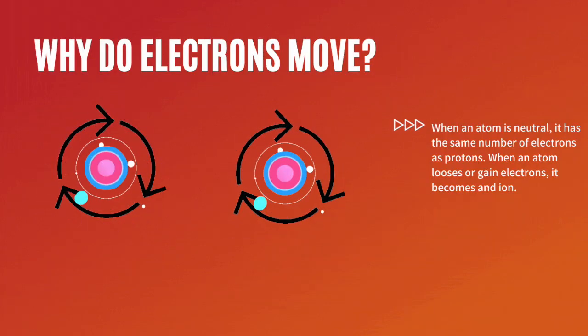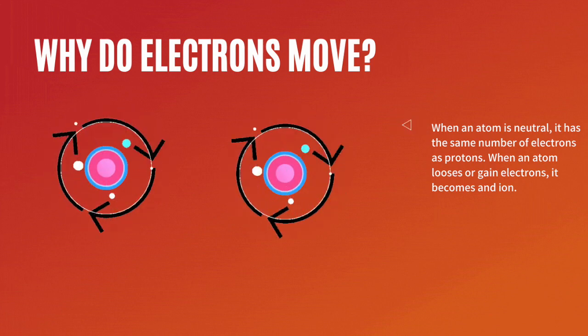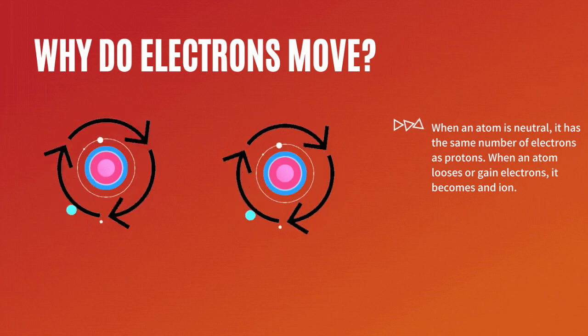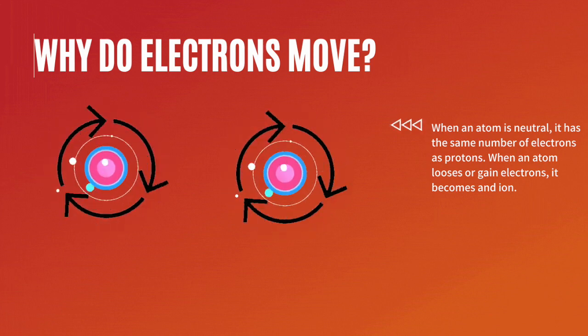When an atom is neutral, it has the same number of electrons as protons. When an atom loses or gains electrons, it becomes positively or negatively charged. This is called an ion.